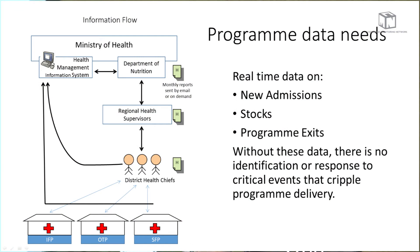In terms of program data needs, we should have real-time data on new admissions, stocks, and program exits. Without these data, there's really no identification or response to the critical events that cripple program delivery. This is the work of systems building, and we're getting closer to having the functional tools we need to complete this task. For the money invested in these programs, this is a minimal point to achieve.